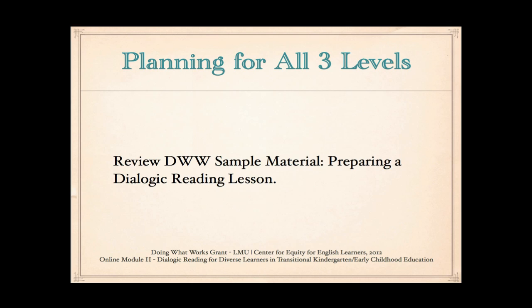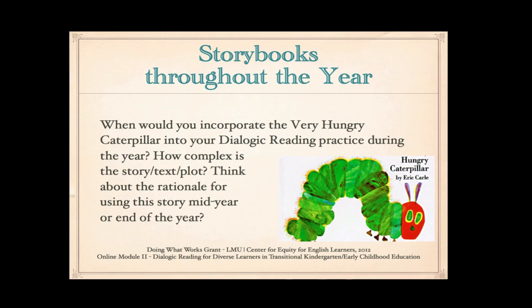This document highlights how teachers can plan for the critical elements outlined in the three levels, focusing on Levels 1, 2, and 3, with the ultimate goal of children owning the story and being able to retell it in their own words. It's important to think about how to use stories throughout the year, making sure that books are connected, build on experience, and increase in complexity of text and vocabulary used throughout the year.